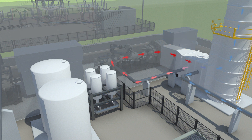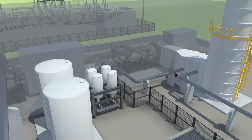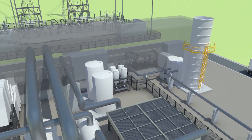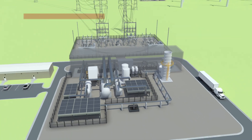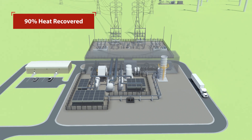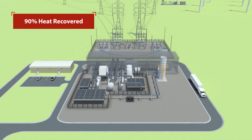The discharged air travels through the recuperator before being released back into the atmosphere at a temperature of around 180 degrees. This process is very efficient, as 90% of the heat is recovered and turned into electricity.